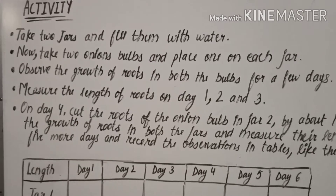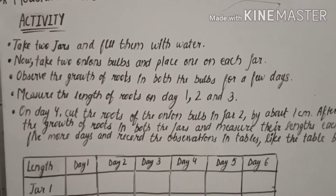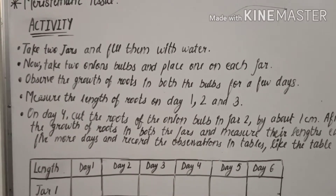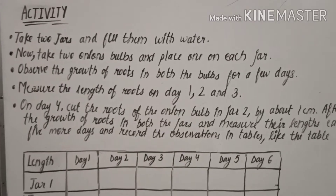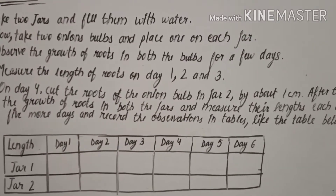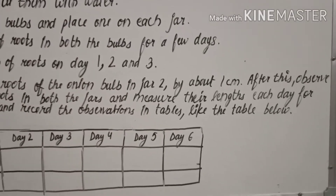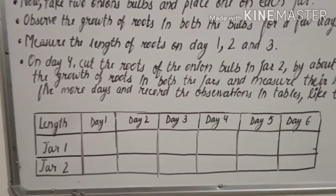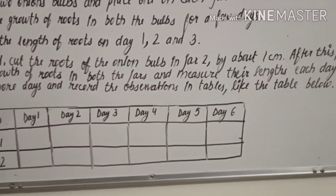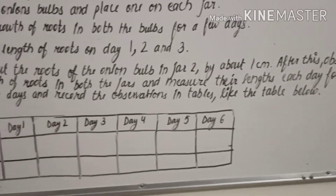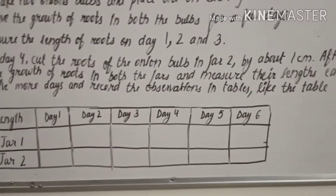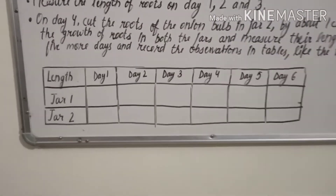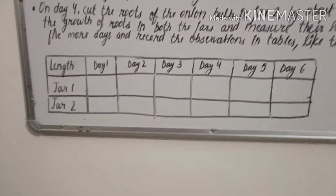The activity steps are: take two jars and fill them with water, then take two onion bulbs and place one on each jar. Observe the growth of roots in both the bulbs for a few days. Measure the length of roots on day one, two, and three. On day four, cut the roots of the onion bulb in jar two by about one centimeter. After this, observe the growth of roots in both jars and measure their length each day for five more days, and record the observations in a table.